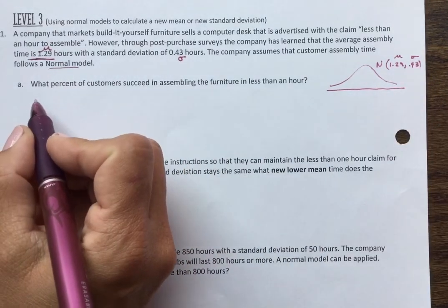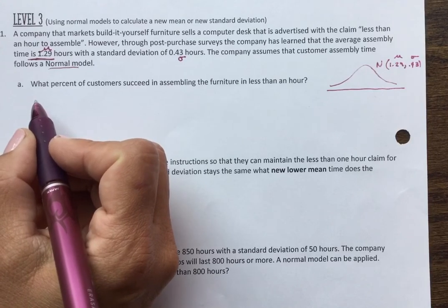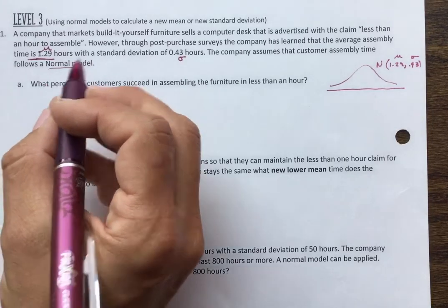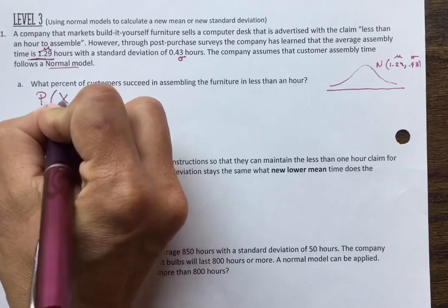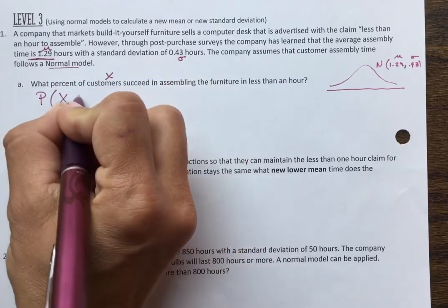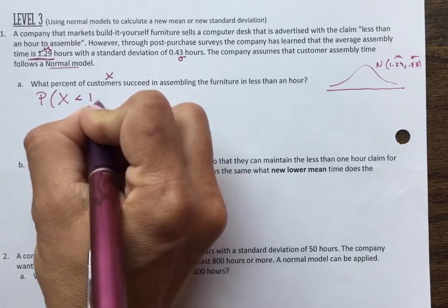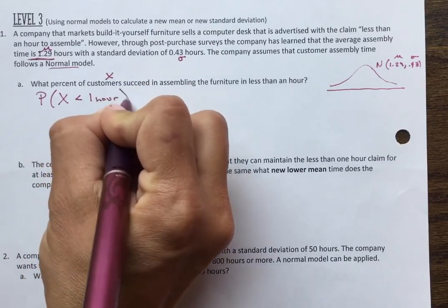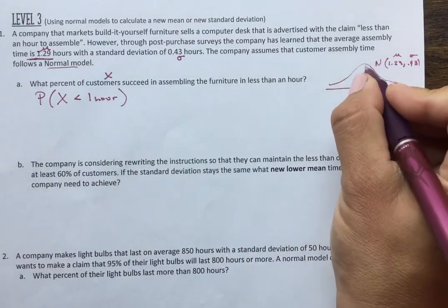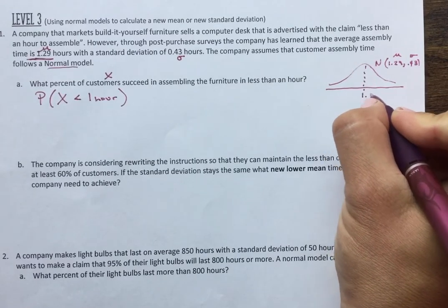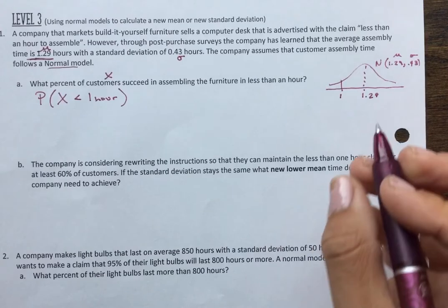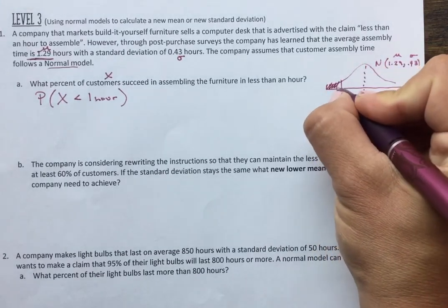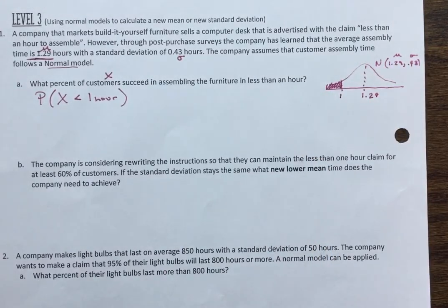Question A says, What percent of customers succeed in assembling the furniture in less than an hour? So what percent of customers, customers are going to be X, in less than one hour? Okay. So on a normal curve, I know the mean is here, 1.29. An hour is below. And we're trying to see what percent will assemble this in less than one hour.